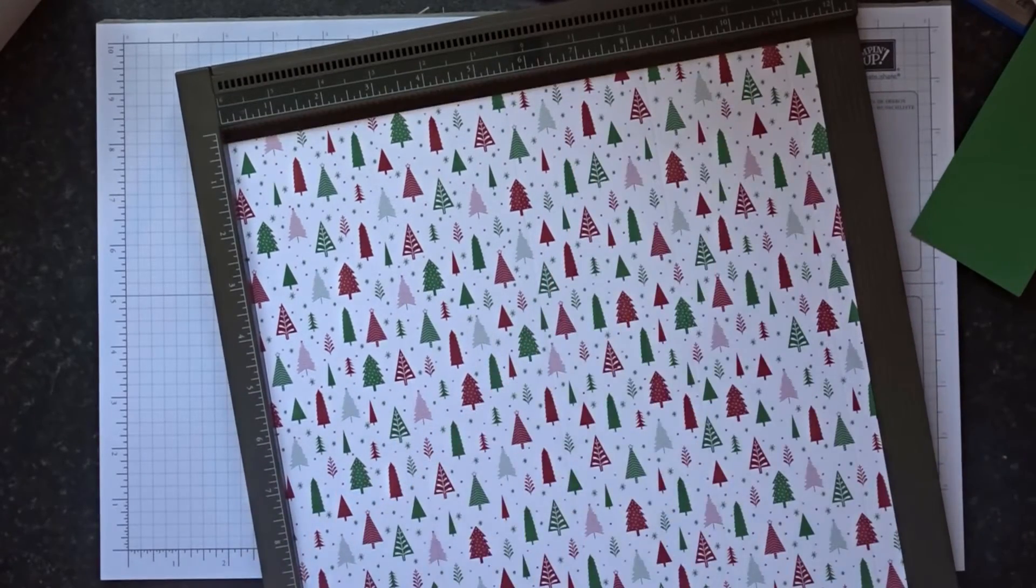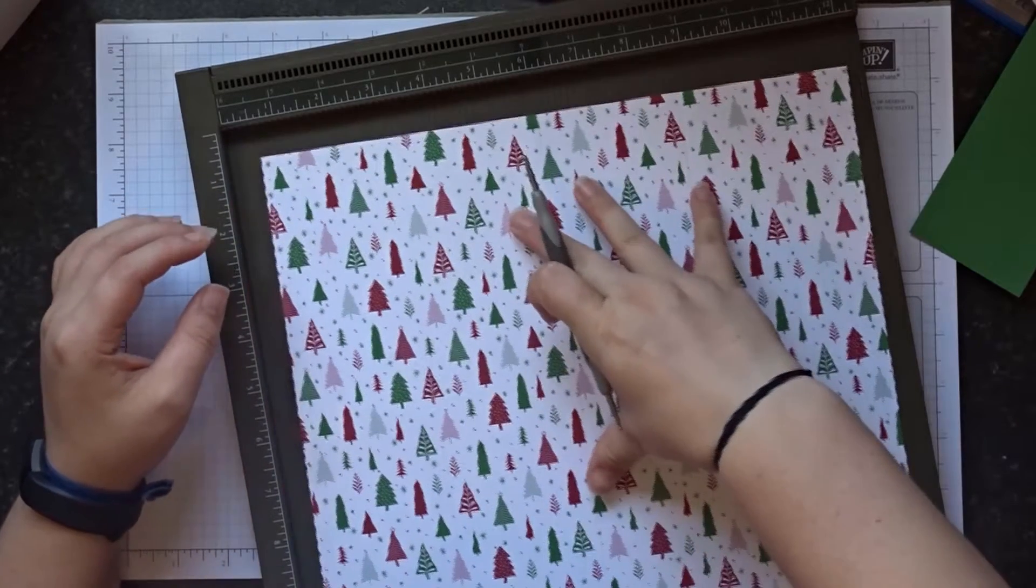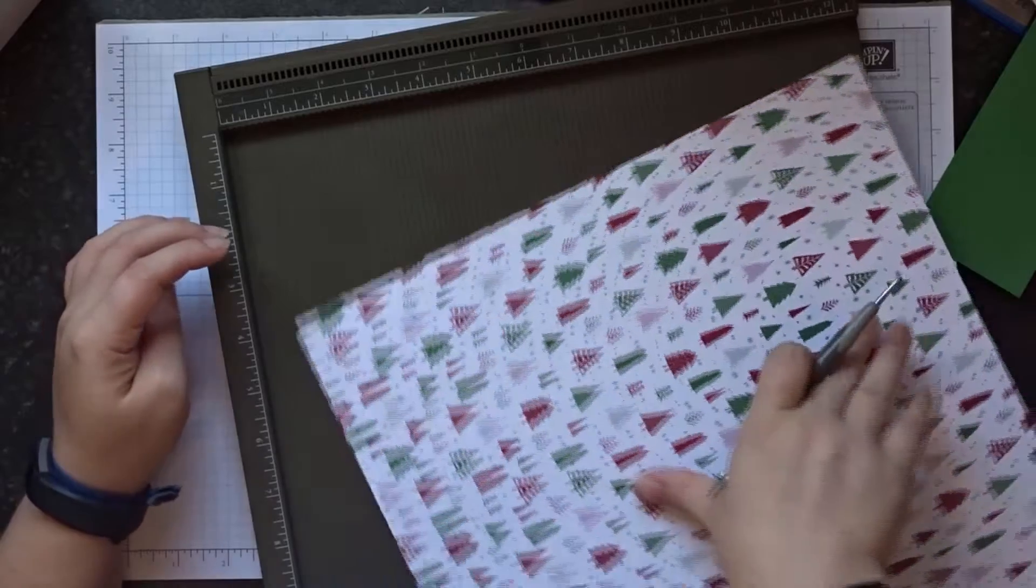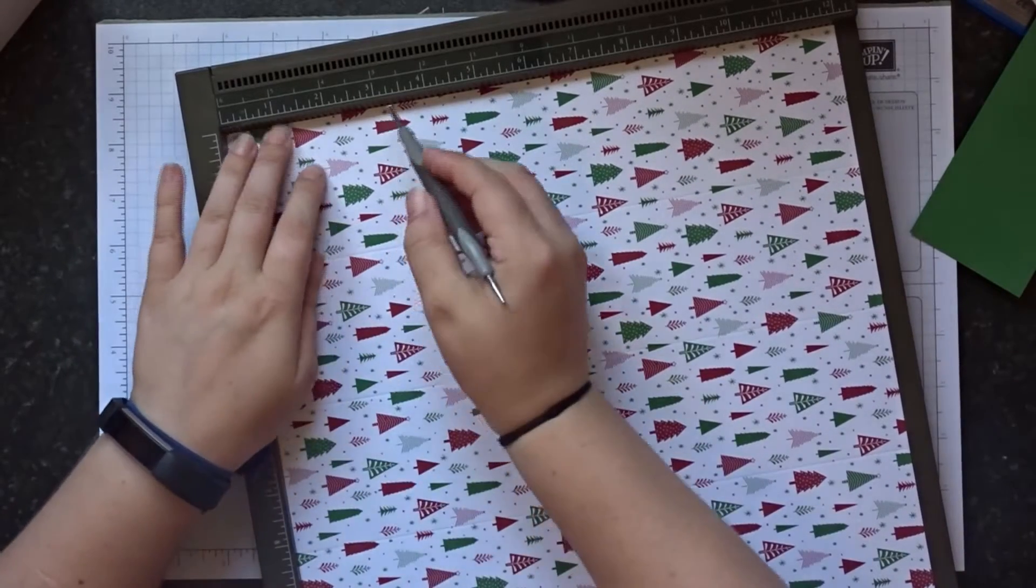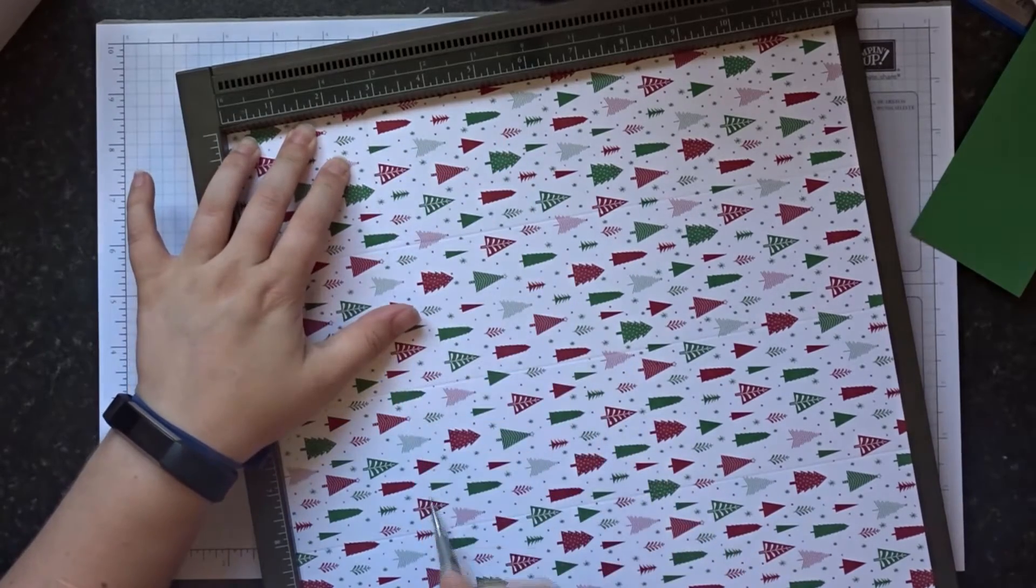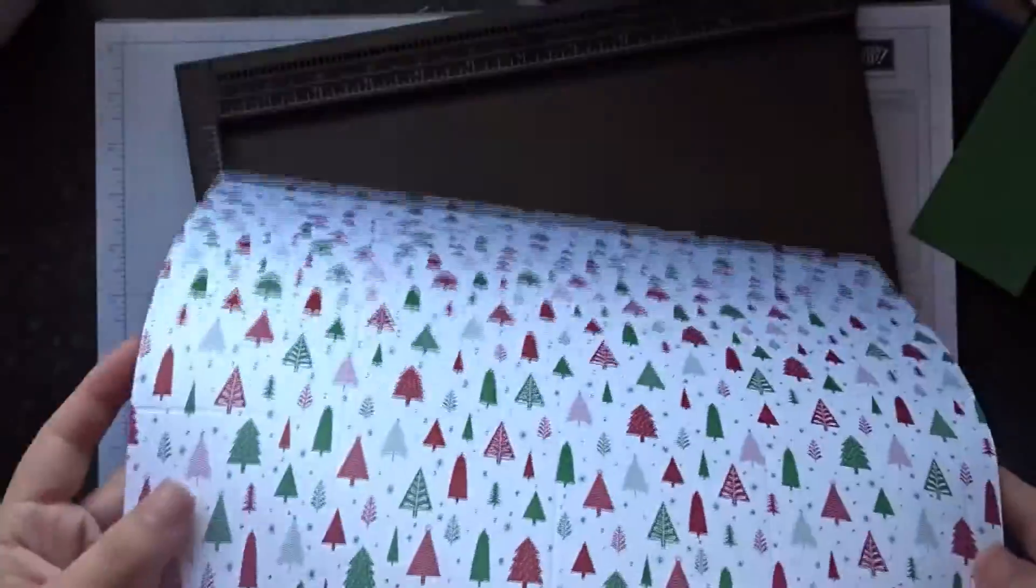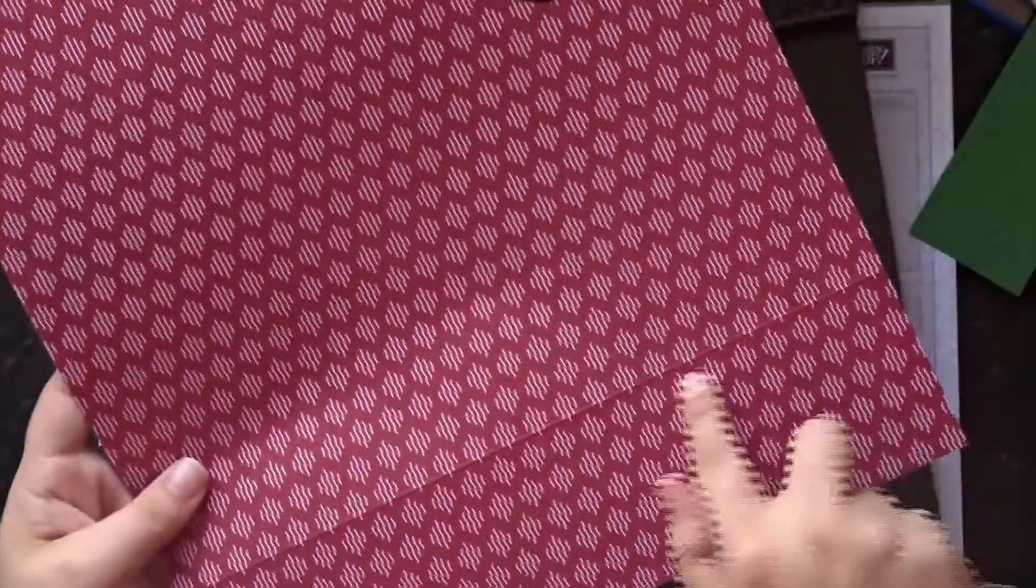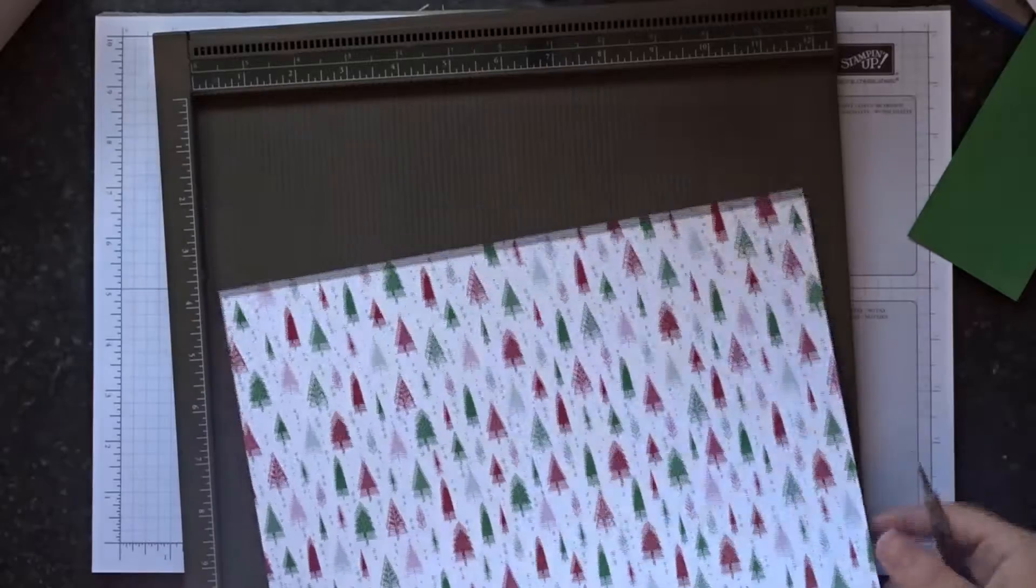You're then going to rotate it round and when you're doing this we want to be scoring the bottom of the box. So again, watch your pattern. I'm going to rotate it to the left and then score at two and three quarter inches. So hopefully you can see that when it's the correct way up, the score line is at the bottom because that will form our base. That's all the scoring we need to do.